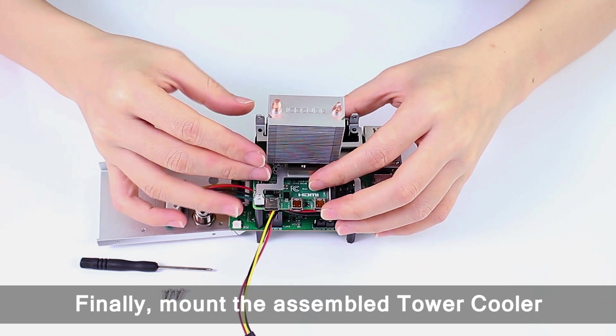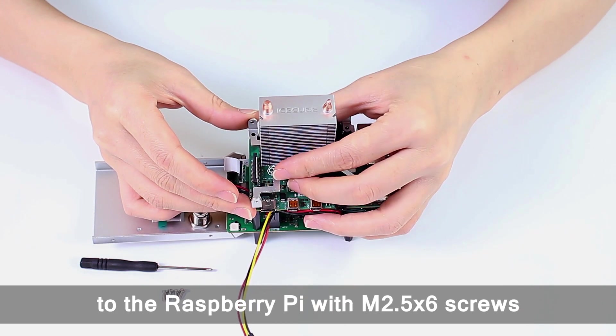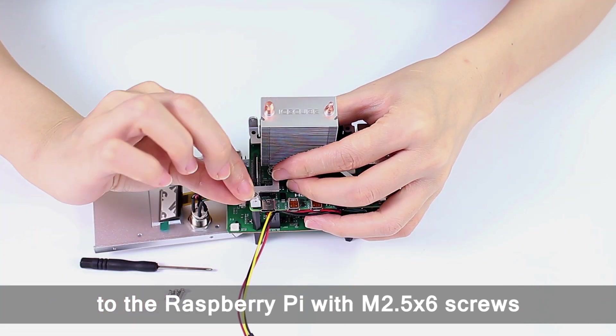Finally, mount the assembled tower cooler to the Raspberry Pi with M2.5 by 6 screws.